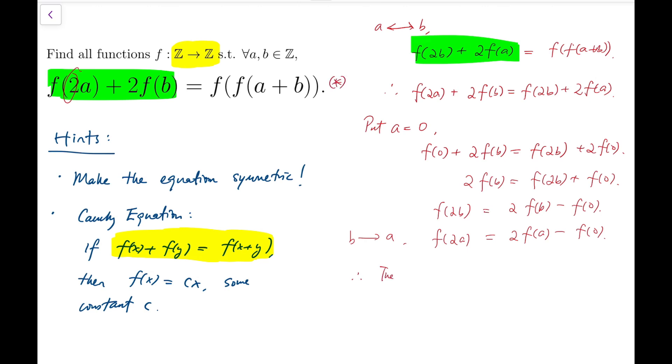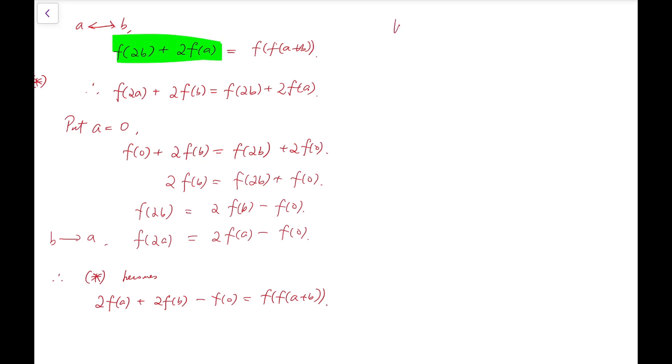Let me label the original equation as star so I don't have to copy it again and again. Equation star becomes 2 times f of a plus 2 times f of b minus f of 0 equals f of f of a plus b. Now if I put a equals 0 into the new version of star again, I get 2 times f of 0 plus 2 times f of b minus f of 0 equals f of f of b. So f of f of b equals 2 times f of b plus f of 0.